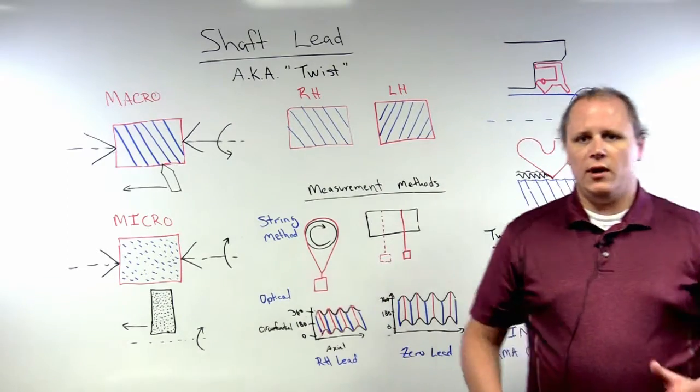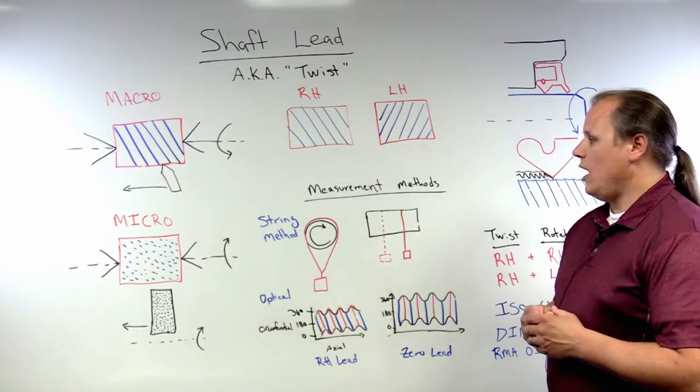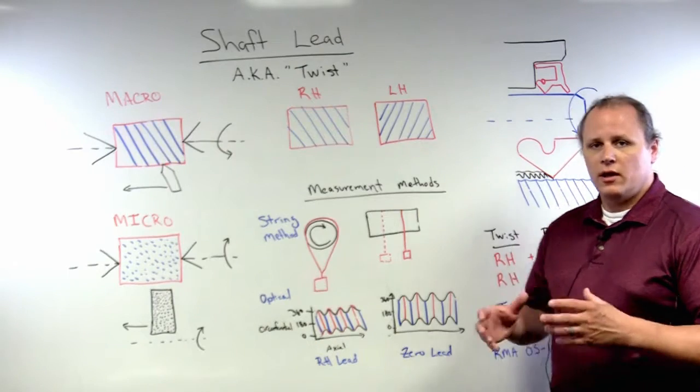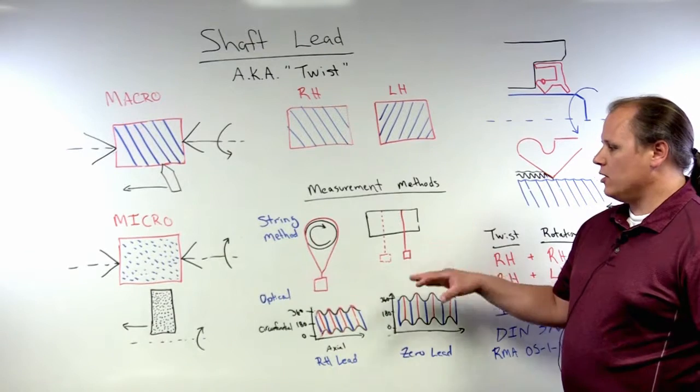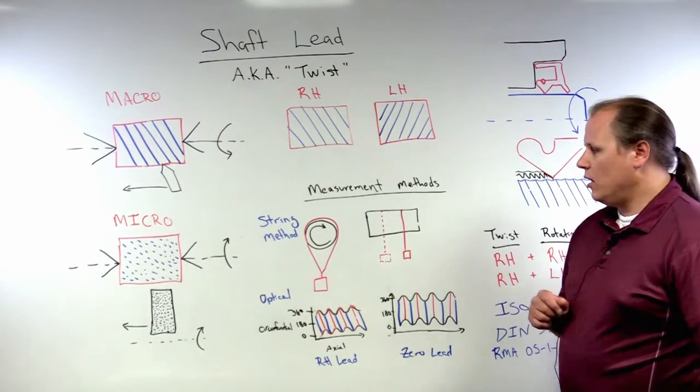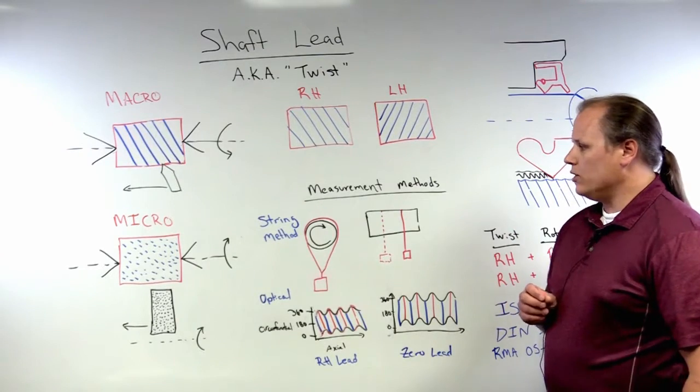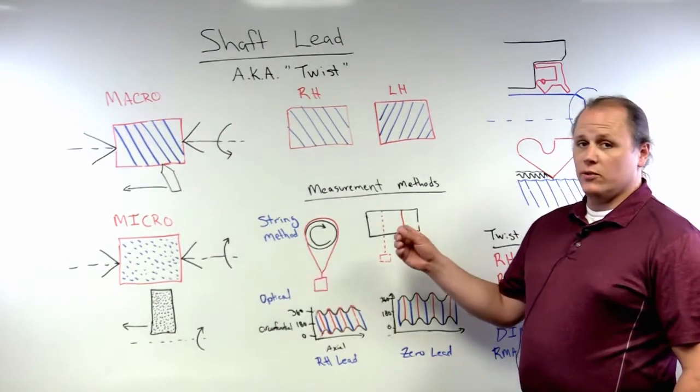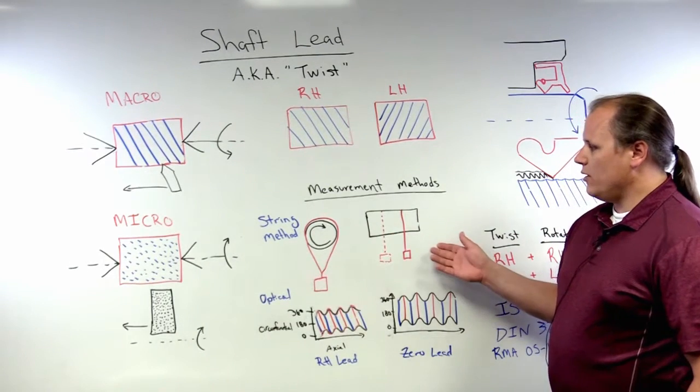So how can we measure and hopefully quantify shaft lead on an actual physical component? There's two major categories out there. There are a lot of different methods developed over the years, but the oldest and most well-known method is referred to as the string method or the thread method.